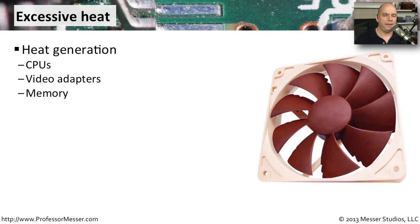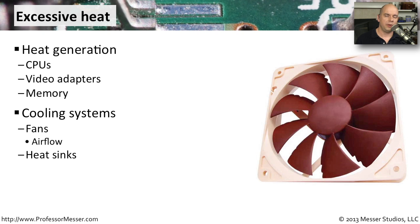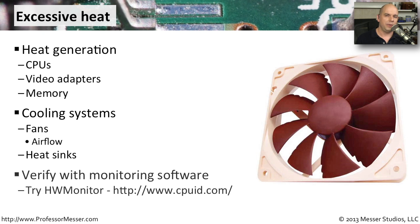Our computers give off a significant amount of heat from components like CPUs, video cards, and memory, and all of these have to be cooled. One of the best ways to cool down our system is with cool air brought through the computer using fans, passing over warm equipment, or through heat sinks that move heat upward so air can cool it faster. If you're trying to determine how hot a computer might be, you can use software that examines the sensors inside your computer. One that I use is called HW Monitor, available at cpuid.com, and it brings up information showing just how hot your computer is getting.